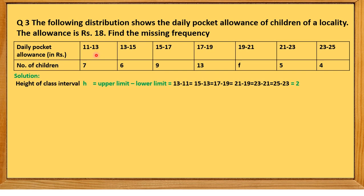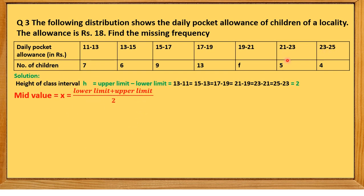The height or size of each class interval is: upper limit minus lower limit — that is 13−11, 15−13, 17−15, 19−17, 21−19, 23−21, 25−23 — which equals 2. Since the class intervals are given, we now need to find the mid-values or class marks.